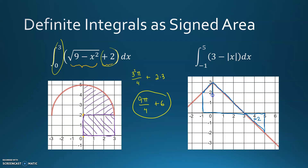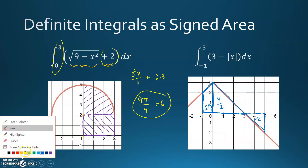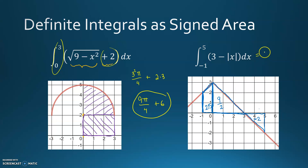The upper region looks like a trapezoid with base lengths of 2 and 3, so an average base of 2.5 times a height of 1. The other triangle is 3 by 3, so divided by 2 gives 9 halves, or 4.5. The total signed area would be 2.5 plus 4.5 minus 2, which is 7 minus 2, or 5.